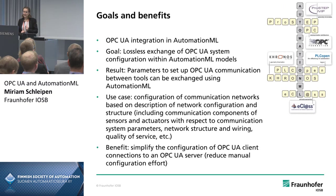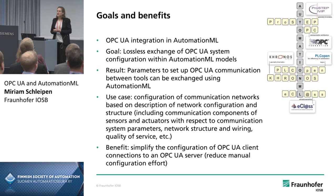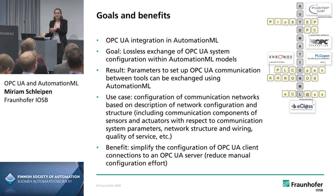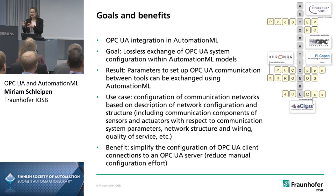On the other hand, it works the other way around too. OPC UA can be built up based on configuration data. To connect from an OPC UA client to a server, you need to know where the server is, what information it provides, and how to connect to it. This means that if you have your engineering models and describe your PLCs, PLC programs, and variables in AutomationML, you can also describe how to access these variables via OPC UA. You can integrate OPC UA configuration information into AutomationML models, so you have information for the online phase already available at the offline phase.